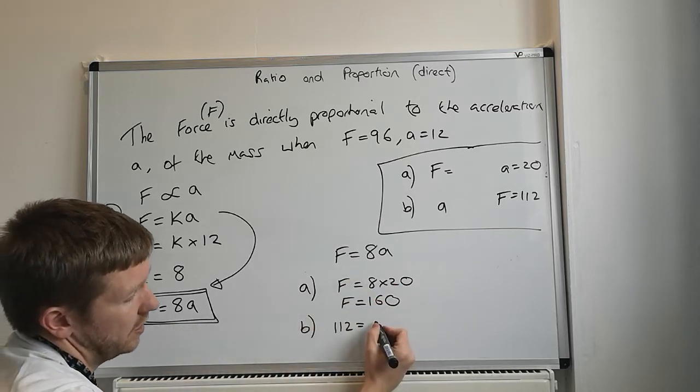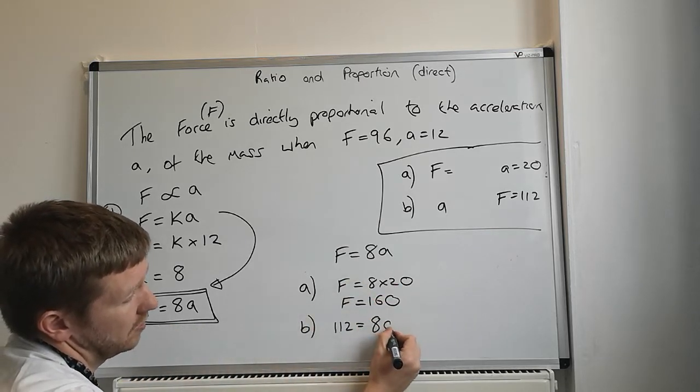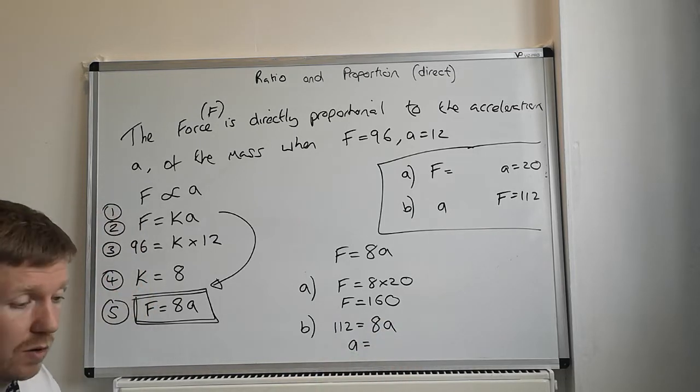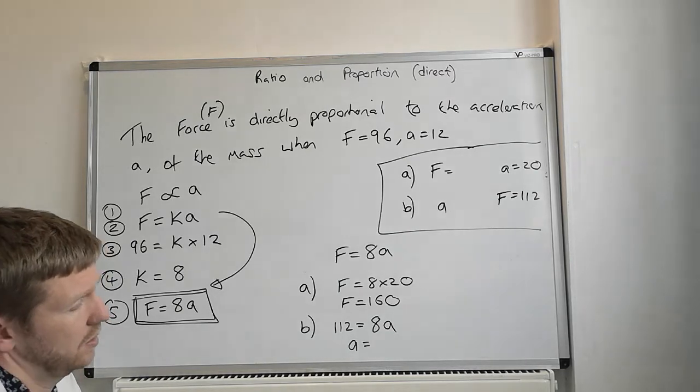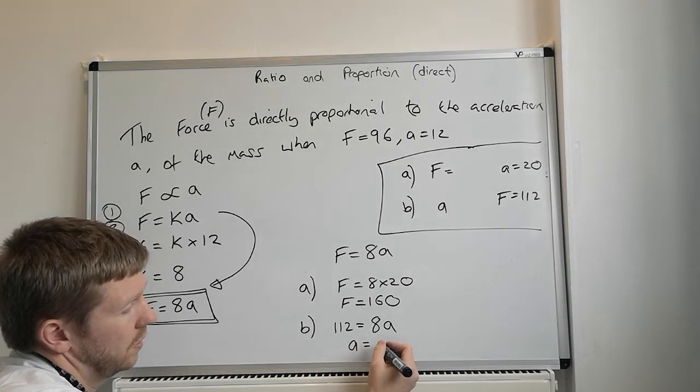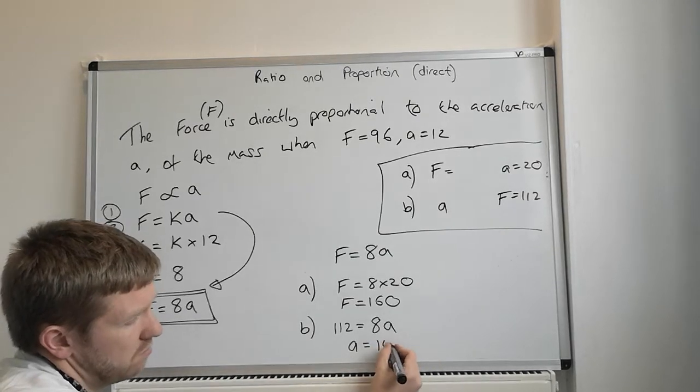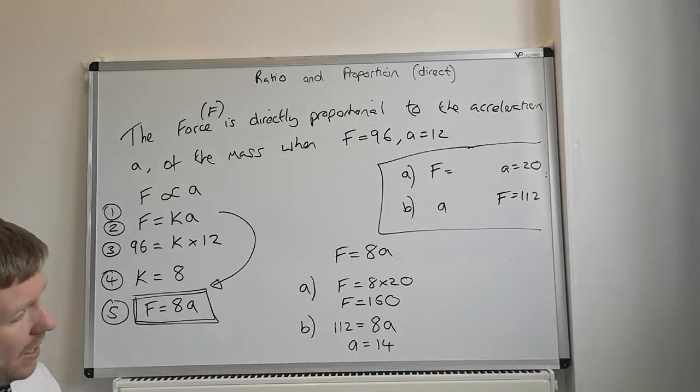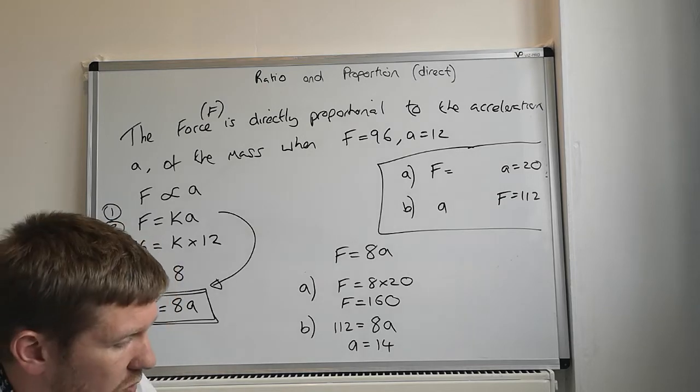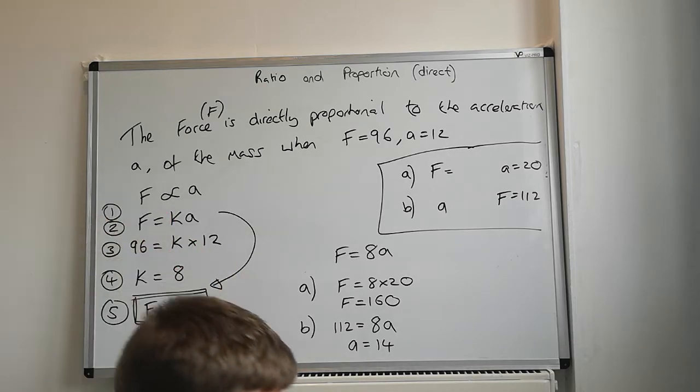And we've got our formula again, F equals 8a. So it's 8 times a, we need to work out what a is. So we do 112 divided by 8 is, how many is that then? 14. We're going to go for another example. Try and get your head around those steps, that's the important bit of this.